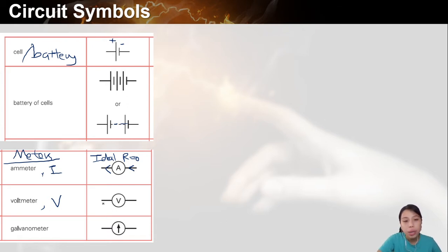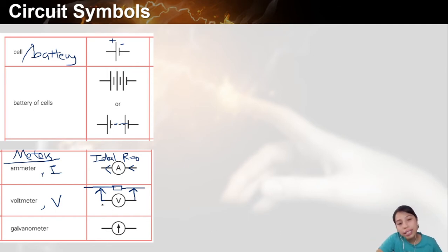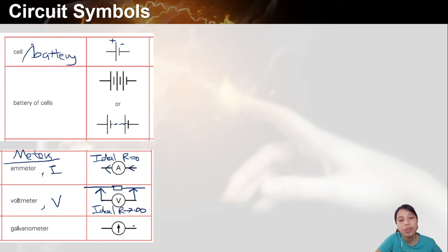The voltmeter, on the other hand, is not actually part of the circuit — you're just going to measure between two points. You just want to somehow intercept two points to say, between here and here, what's the difference in energy? So ideally you don't want current to flow through it, so you want your resistance to be as big as possible — infinity if possible — because it's not part of the flowing current circuit.